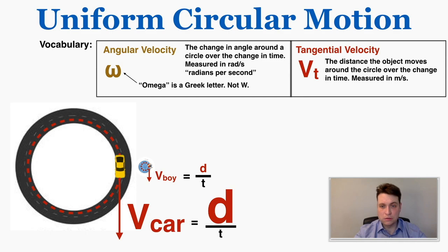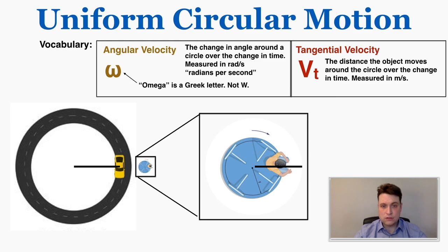That's tangential velocity — how fast the object is actually moving in meters per second. The car's velocity is much greater than the boy's velocity. But there's another aspect of circular motion where these two things are actually equal. Angular velocity is the change in angle around a circle over the change in time, measured in radians per second — how many radians around a circle you go per second.